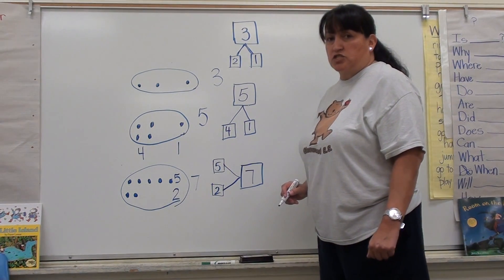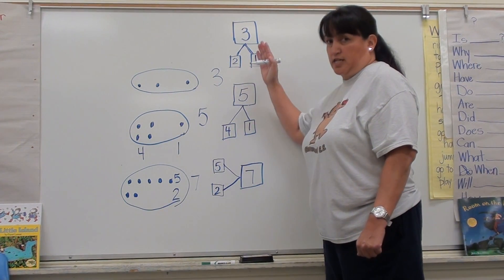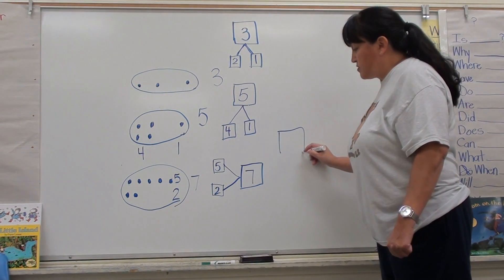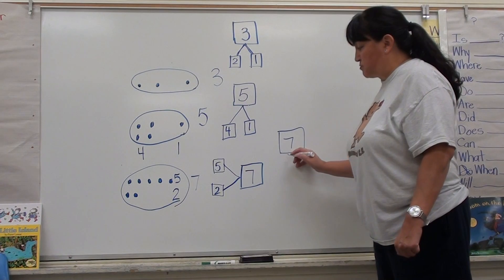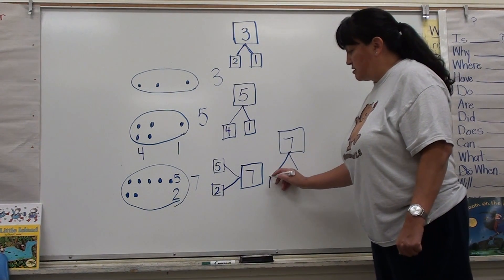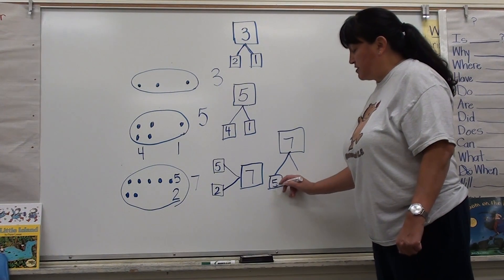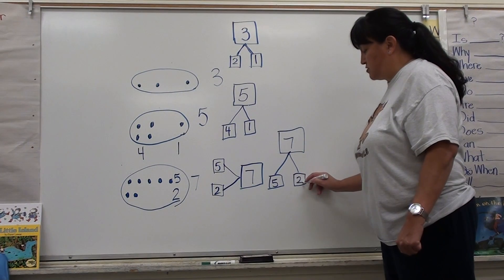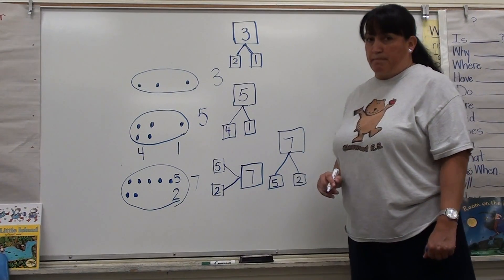If I wanted it to look vertically like these, I can always just switch it, put the seven on top, which is my whole number, put the bonds. My one part is five and my other part is two. And that's how we do number bonds.